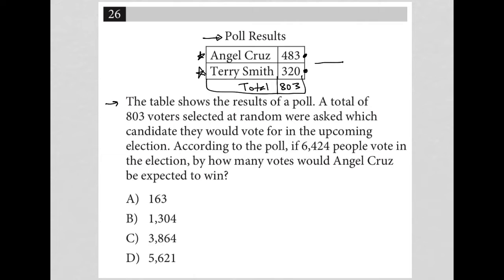We need to use this information to figure out how many votes we think Angel Cruz would get out of the 6,424 votes, and how many votes Terry Smith should get out of those 6,424 voters. Then we can calculate by how much Angel Cruz would be expected to win. I'm going to use a proportion to solve this.